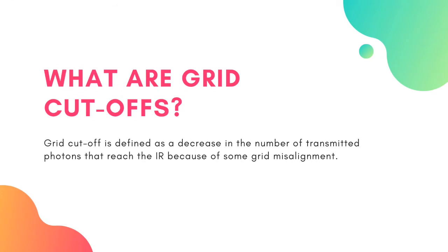What are grid cutoffs? Grid cutoff is defined as a decrease in the number of transmitted photons that reach the image receptor because of some grid misalignment.